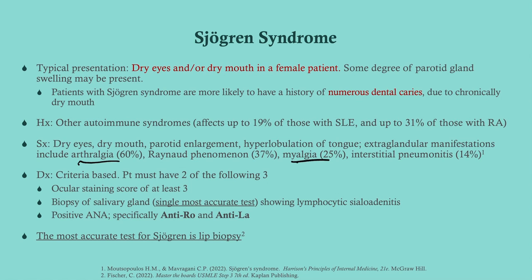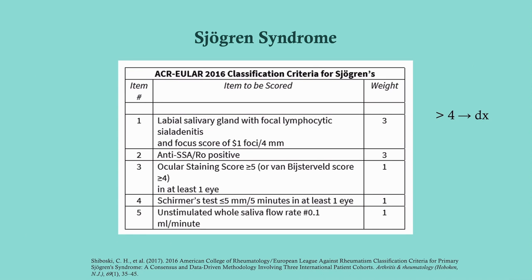This is a criteria-based diagnosis. The most accurate test is a biopsy of the salivary gland — specifically a lip biopsy. We don't need to go to the main gland; there are glands in the lip that will be infiltrated in Sjögren's, making it a much easier and safer approach, though nobody likes having their lip cut into.